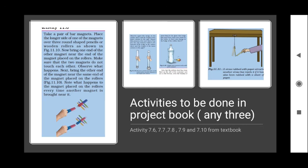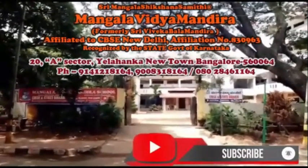These are the activities you should do in your project books. There are five activities in your textbook — 7.6, 7.7, 7.8, 7.9, and 7.10 — and you can select any three. They are simple experiments: one with two magnets, one with the disc inserted into water, and a straw experiment where you rub it on your hair to create friction and attract paper. Hope you understood this chapter, students. Thank you.